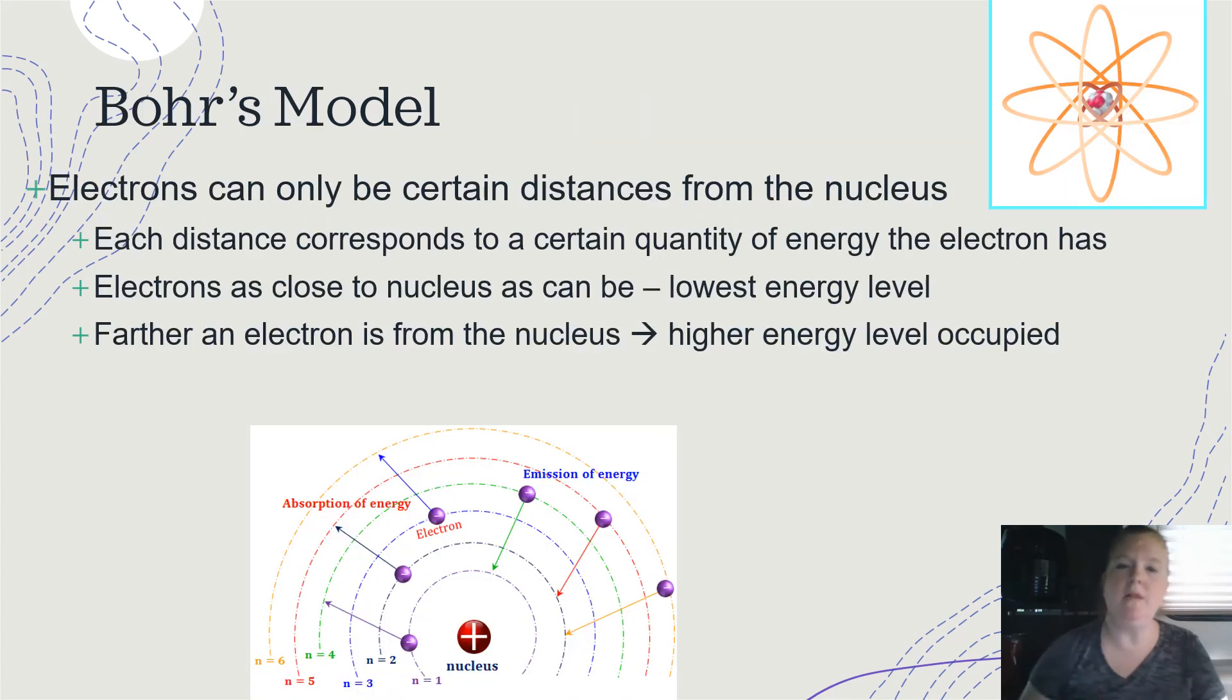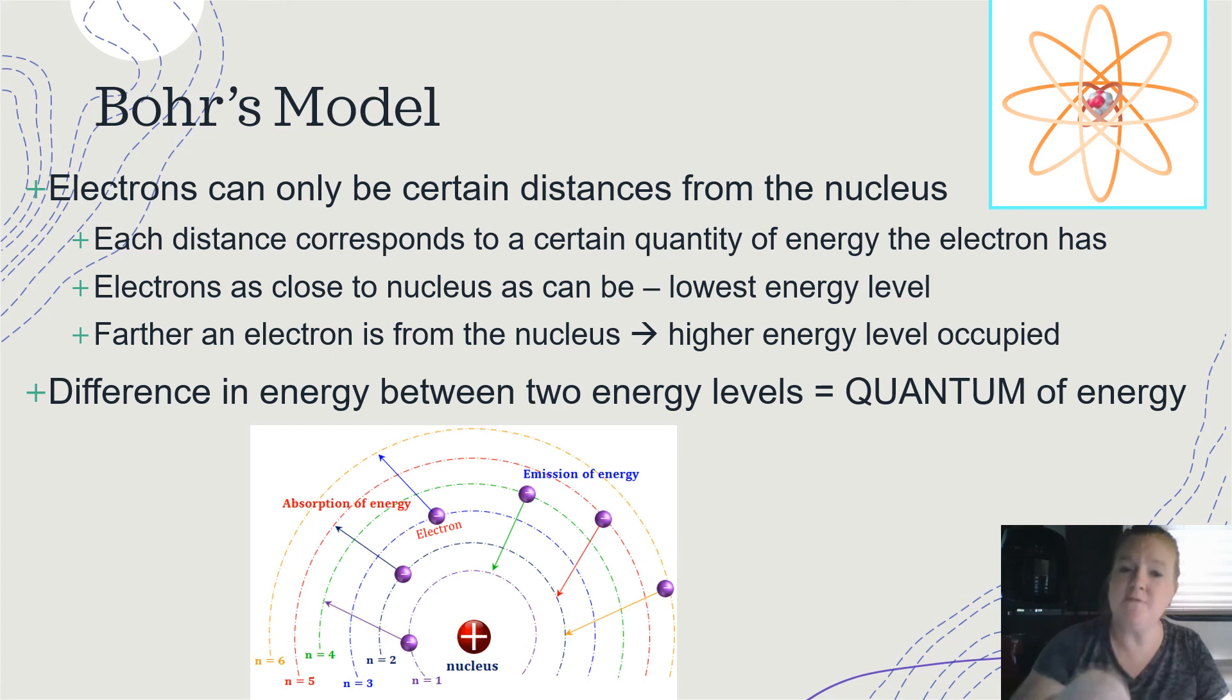So Bohr's model. Electrons can be certain distances from the nucleus. Each distance corresponds to a certain quantity of energy. Closer to the nucleus, less energy. As you get further and further away, more energy. So again, closer to the nucleus, lower energy levels. The difference in energy between two energy levels is called a quantum of energy, an amount, is specific. So I go from energy level three to energy level two, that's a specific amount of energy.